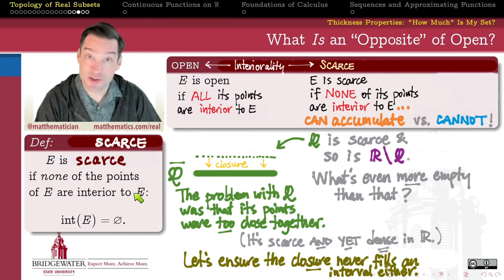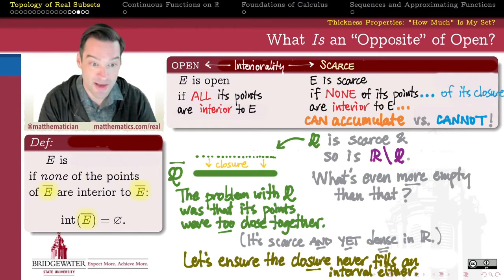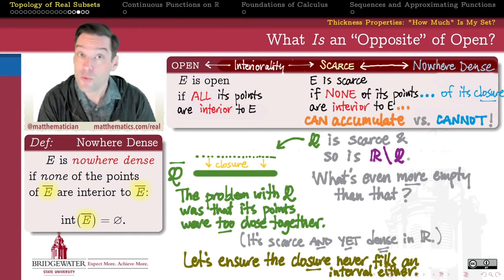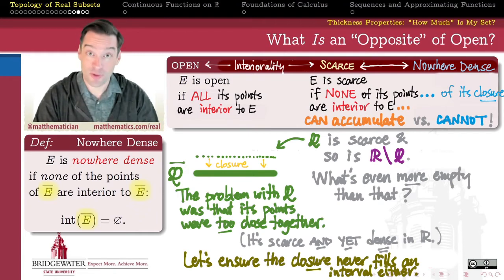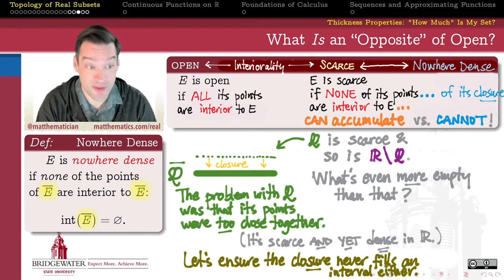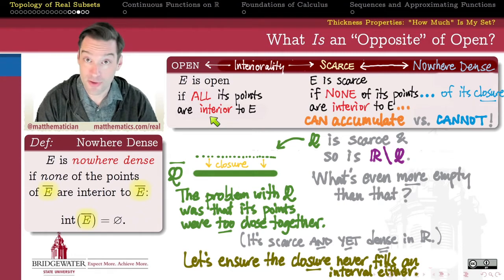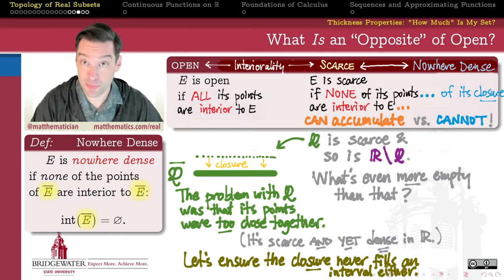We replace all of the E's in the definition of scarce with the closure of E instead. In doing so, we get a stronger notion that is friendlier to work with — we call these the nowhere-dense sets. Nowhere-dense sets are those that not only contain no interior points, but neither does their closure contain any interior points. So the interior of the closure is empty, not just the interior of the original set. Nowhere-dense sets thus live at the opposite end of the interiorality spectrum from open sets.